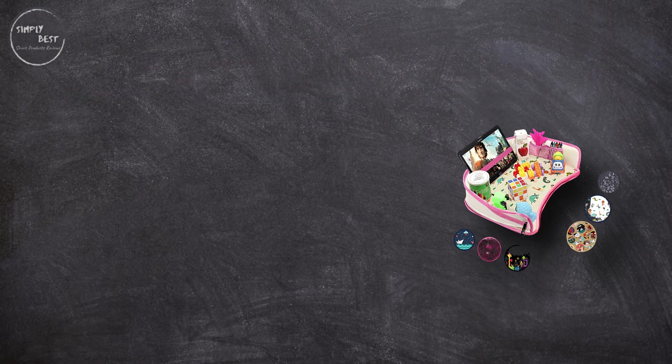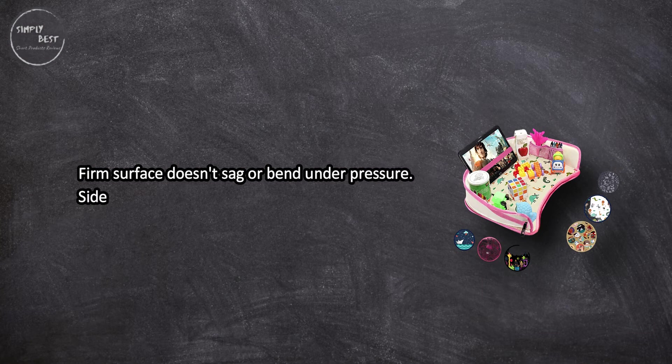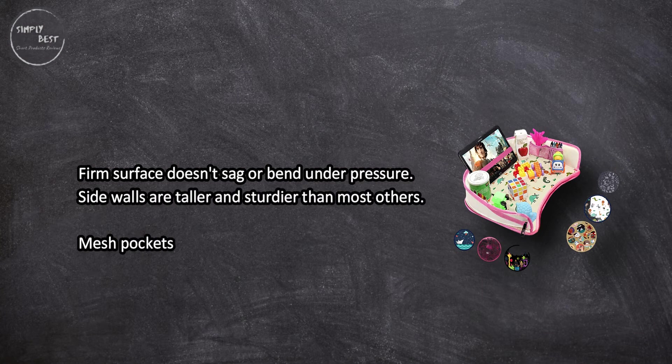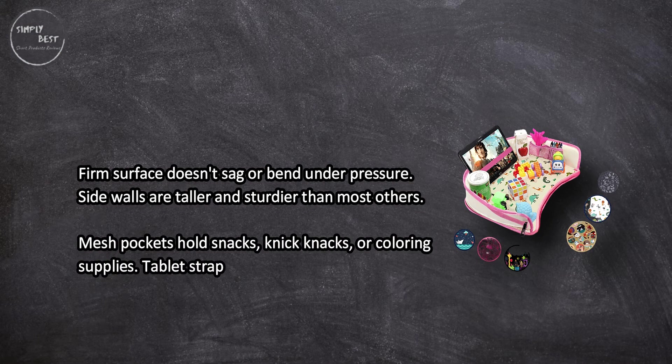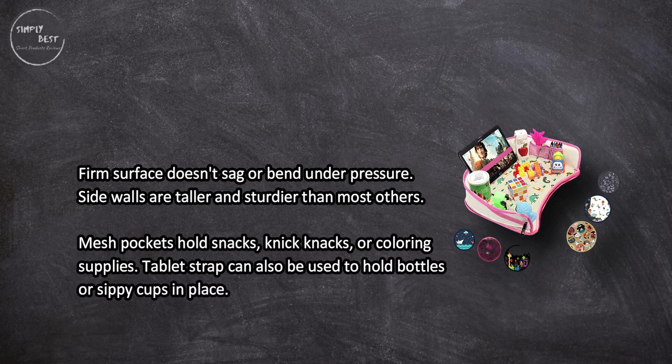At number one, D Moose toddler car seat travel tray. Firm surface doesn't sag or bend under pressure. Side walls are taller and sturdier than most others. Mesh pockets hold snacks, knickknacks, or coloring supplies. Tablet strap can also be used to hold bottles or sippy cups in place.